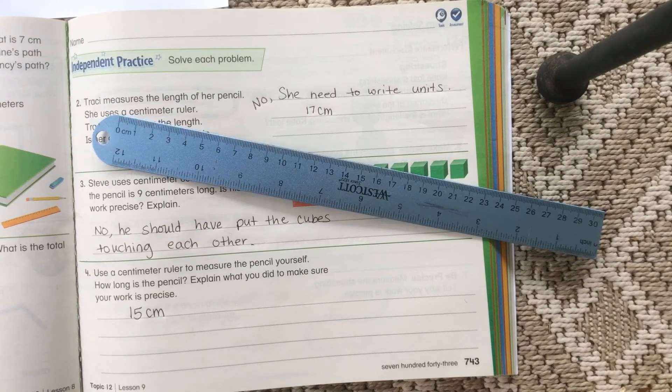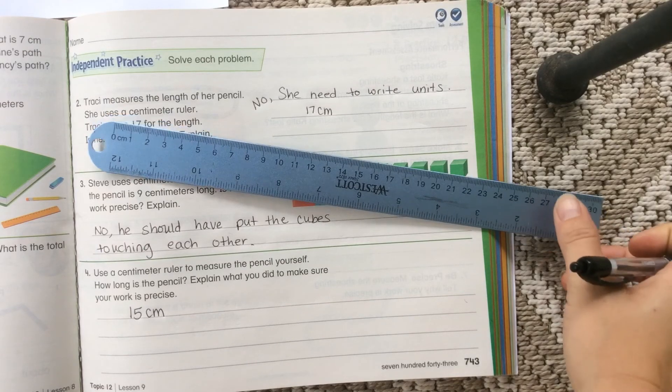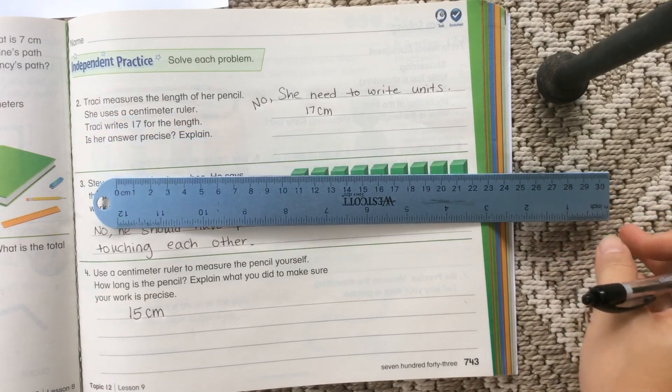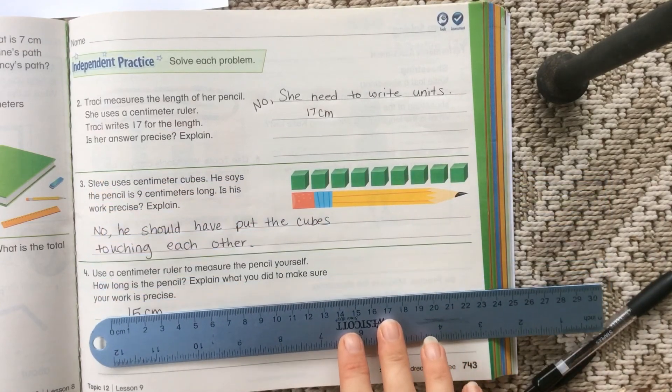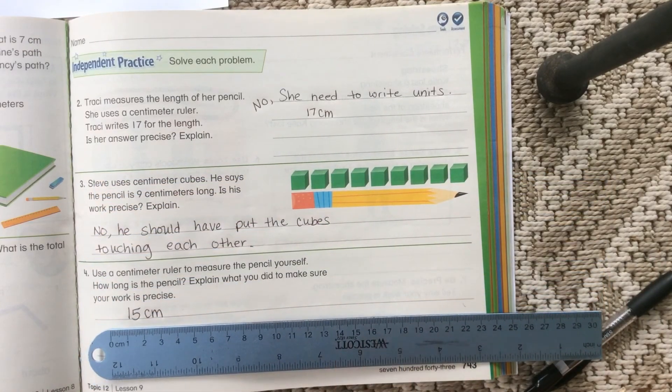So I hope that you understand how to be precise when you're measuring. It's very important when we're precise because it helps whoever is reading our measurements, or maybe if we're using our measurements for something important, it helps ensure that we're measuring correctly. Okay. Have a great day. Bye.